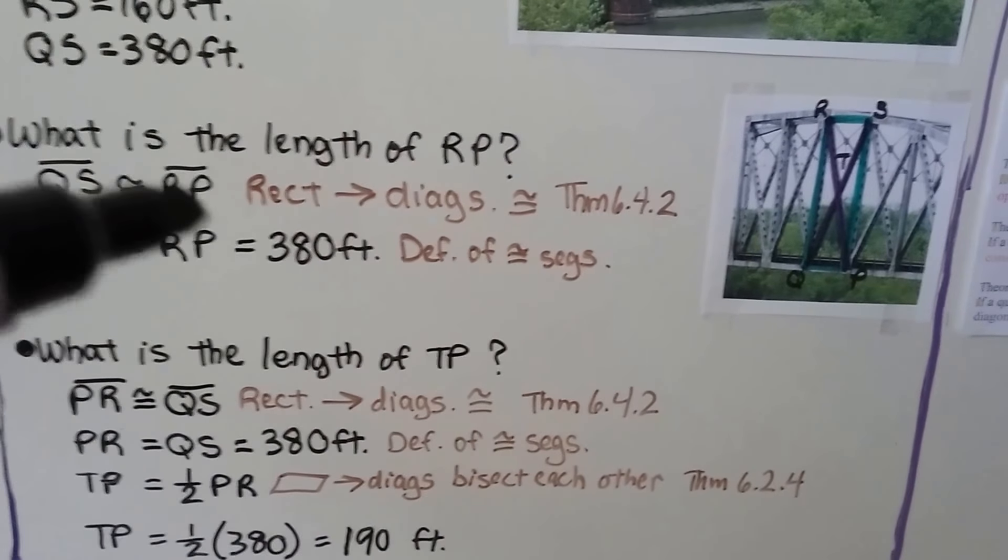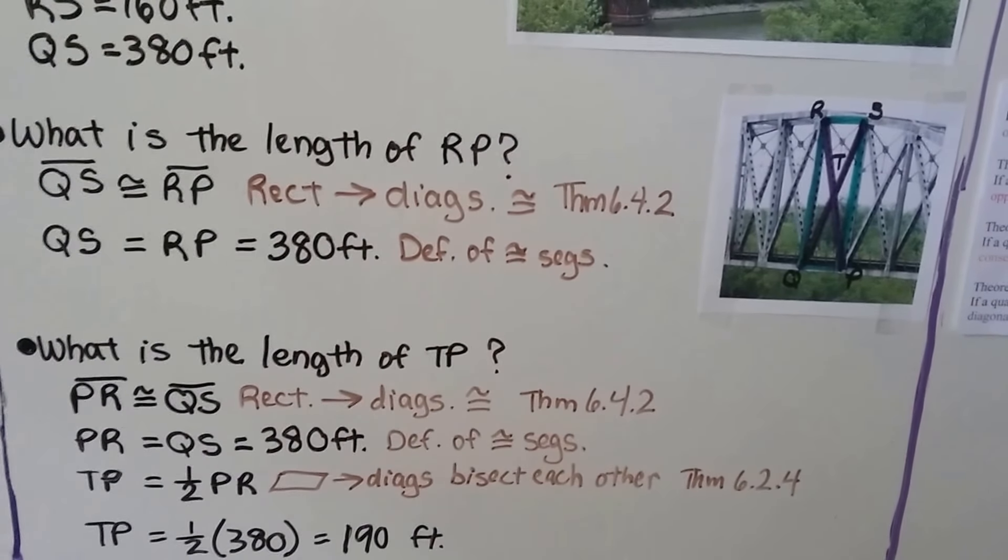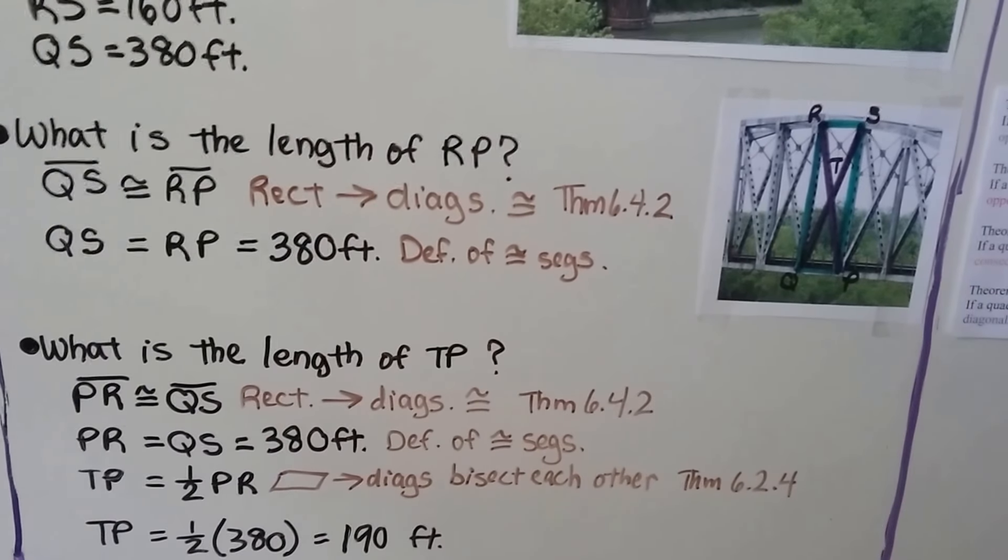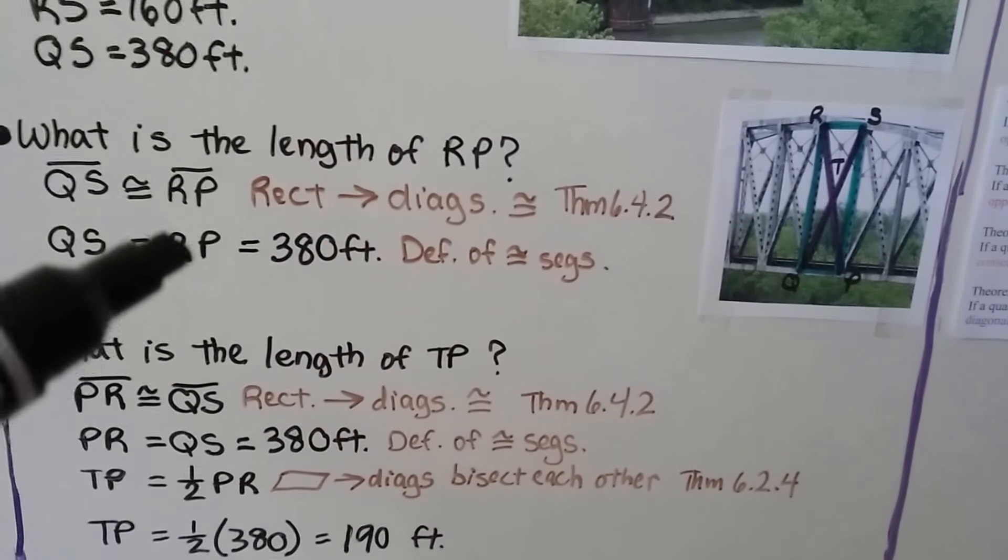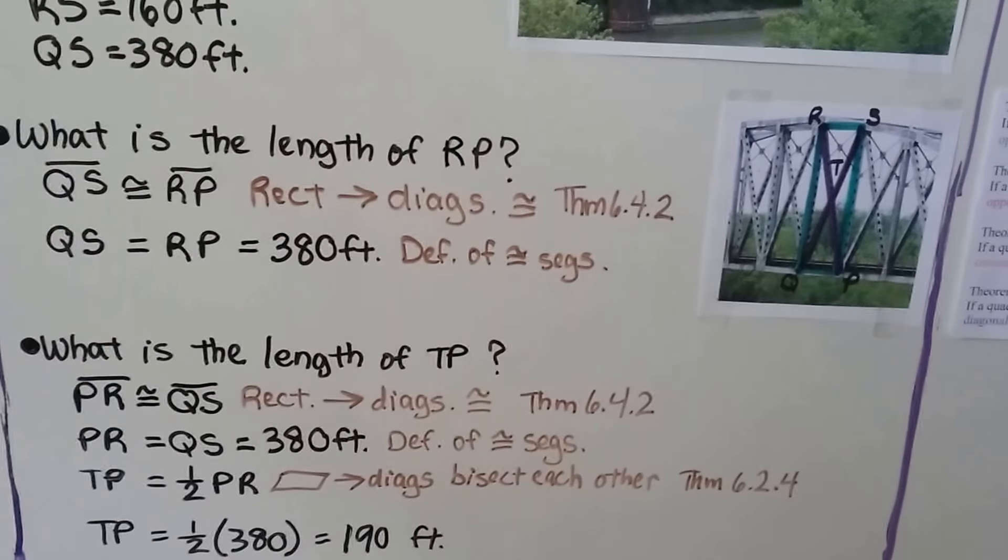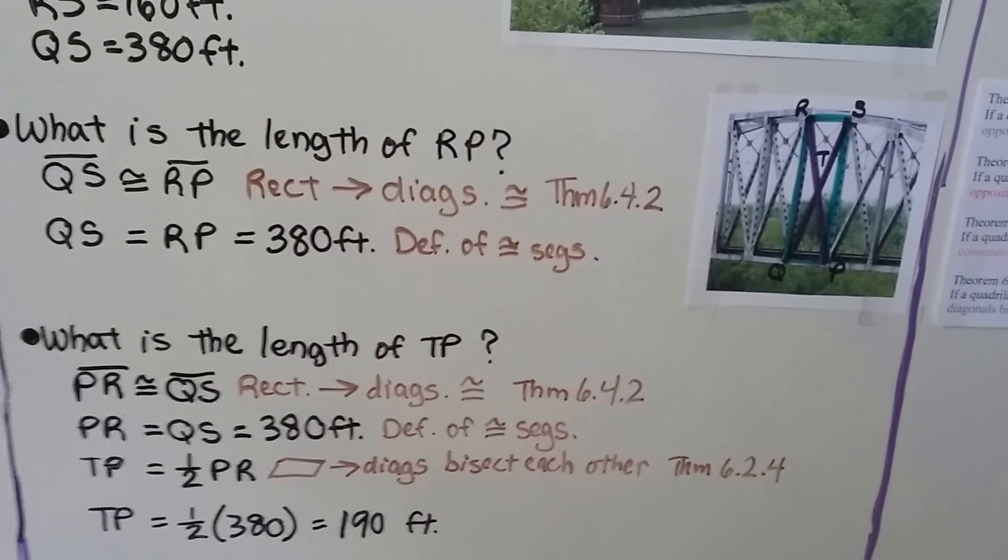QS is congruent to RP, because if it's a rectangle, then the diagonals are congruent. And that means QS is equal to RP, which means it's equal to 380 feet, because that's the definition of congruent segments.